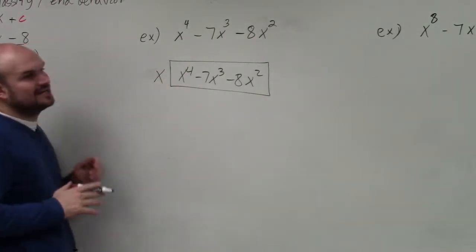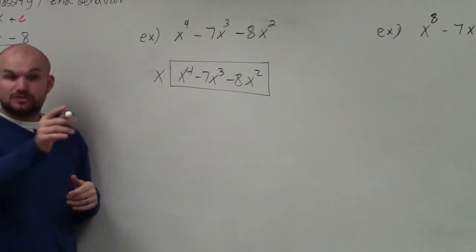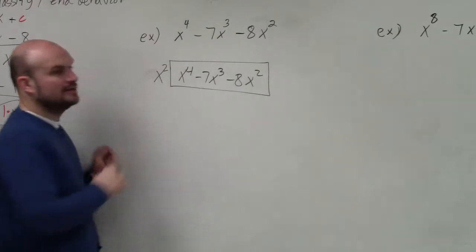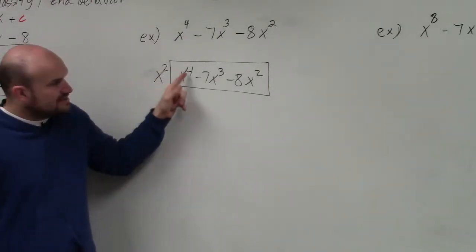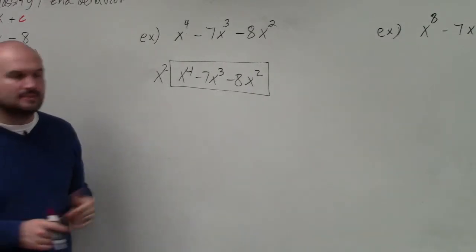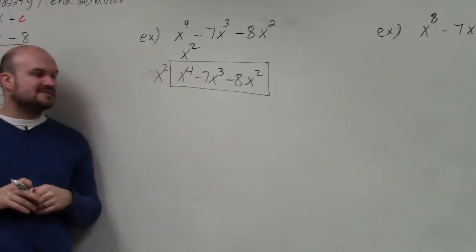Is x the largest power? x to the first power, is that the largest power that we can write for all of these? x squared, right? x squared. Now let's test it. If this side length is x squared, x squared times what gives you x to the fourth? x squared. x squared times what gives you negative 7x cubed? Negative 7x.